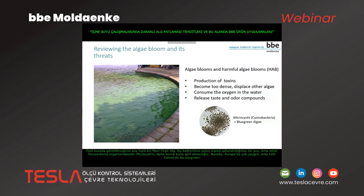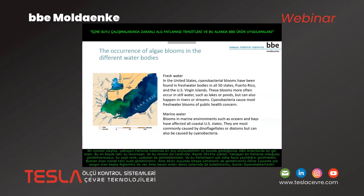The microcystis, we will come back to this later, but they are very common here in Europe and all over the world. In the next slide I can tell you something about the upcoming blooms. What we see here is Lake Erie in the US, which is the largest freshwater reservoir. The picture from 2014 on the left side shows an upcoming bloom — this green color you can see from satellite — and these blooms are spreading more and more.